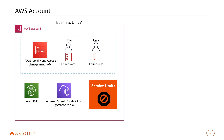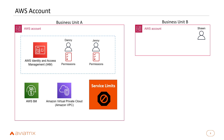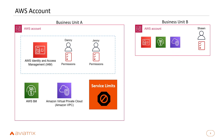In a larger enterprise, Danny and Jenny might be part of one business unit, while other business units want to use AWS as well. Business unit A doesn't want others racking up their bill or service limits, so other business units will create their own AWS accounts with their own IAM usernames, roles, permissions, individual bills, VPCs, and service limits — creating a nice separation between units.